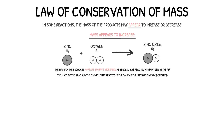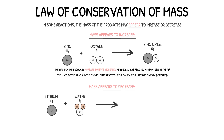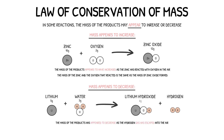In contrast, when a gas is formed as a result of a chemical reaction, the mass of the reaction may appear to decrease. For example, when lithium reacts with water, the products of the reaction are lithium hydroxide and hydrogen gas. Because the hydrogen gas will escape into the air, the mass of the products will appear to have decreased. However, the law of conservation of mass tells us that the mass of the lithium and water that have reacted is the same as the mass of the lithium hydroxide and hydrogen that are produced.